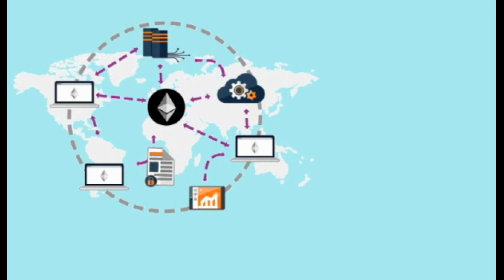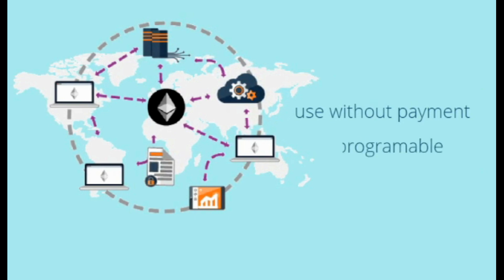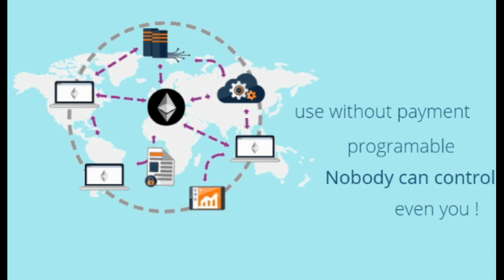Ethereum builds on Bitcoin's innovation, with some differences. Both let you use digital money without payment providers or banks. But Ethereum is programmable, so you can also use it for lots of different digital assets. Nobody can control it, even you. It's a network of computers combined into one powerful decentralized supercomputer.